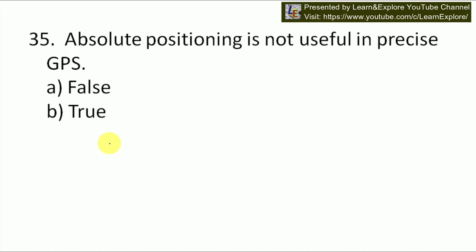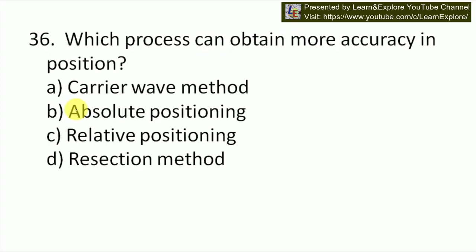Next question: absolute positioning is not useful in precise GPS — justify this sentence. Our answer is true, because absolute positioning is not much recommended in case of precise GPS as it lacks accuracy in its output. So absolute positioning is not useful because it lacks accuracy. Our answer will be B.